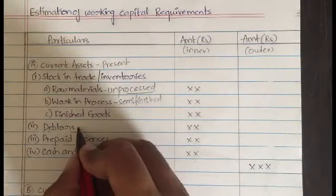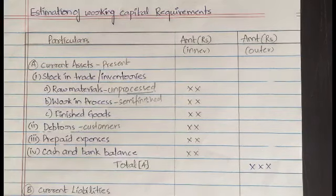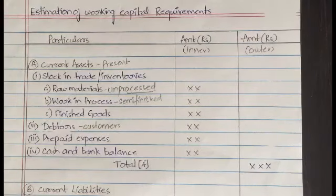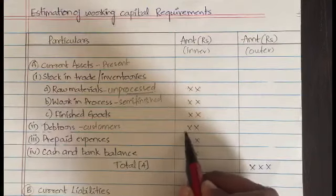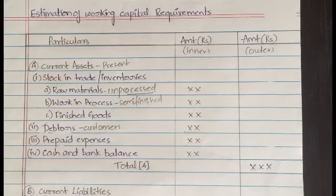Debtors are the customers who purchase the stock, who purchase the products from your company, but they did not give you the money yet — they will be paying it later. They are called as the debtors. The third one is prepaid expenses — the expenses which you will be paying prior to, or at the start of, your business. The word 'pre' itself says it is being paid first, before.